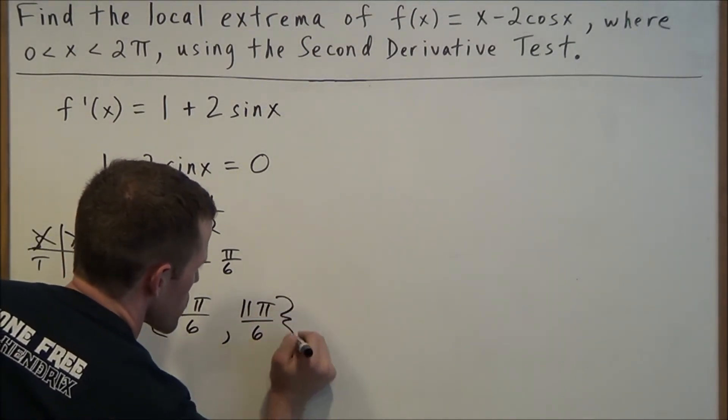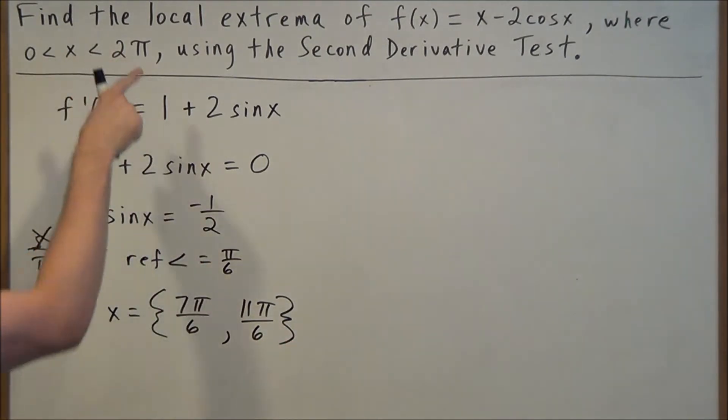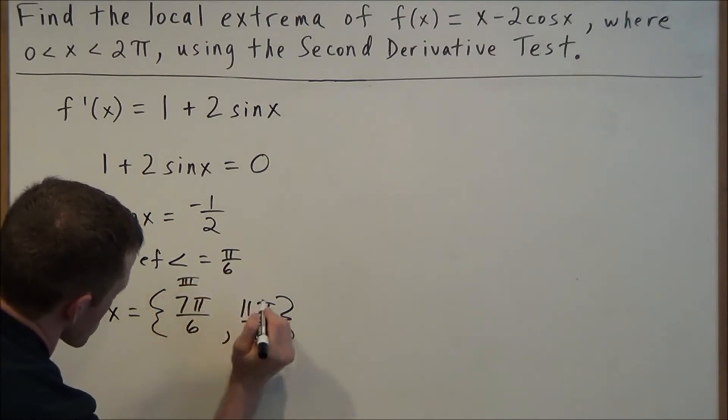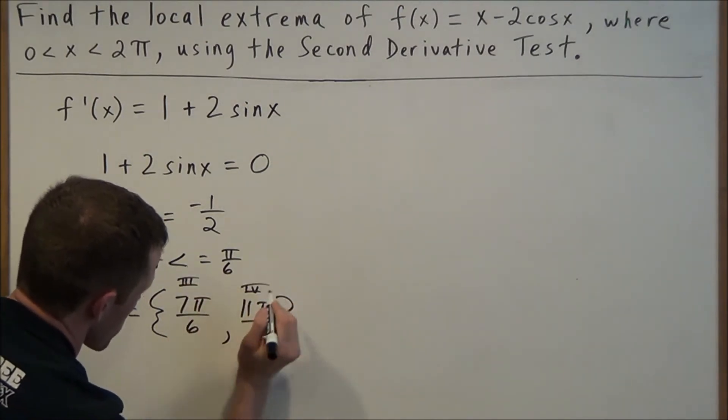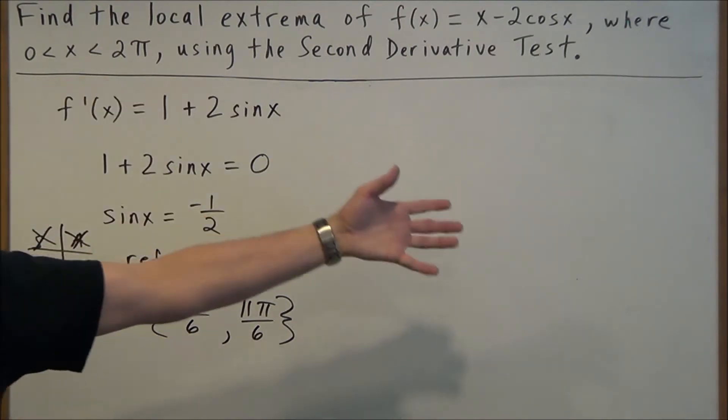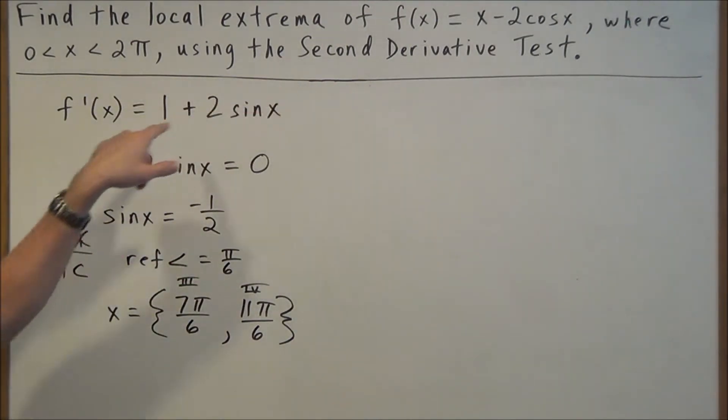Okay, so these are our two solutions on the interval from 0 to 2π for this particular equation here. This is your quadrant 3 answer and your quadrant 4 answer, because this will come into play later. So then to complete this problem and apply the second derivative test, the next thing we do is find the second derivative.